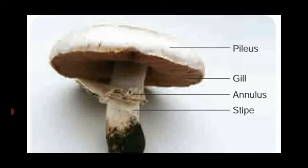This is what we see at the time of the rainy season — in Tamil it is called 'naai kudai' or 'kallan' — because its shape looks like an umbrella. The botanical name is Agaricus campestris.